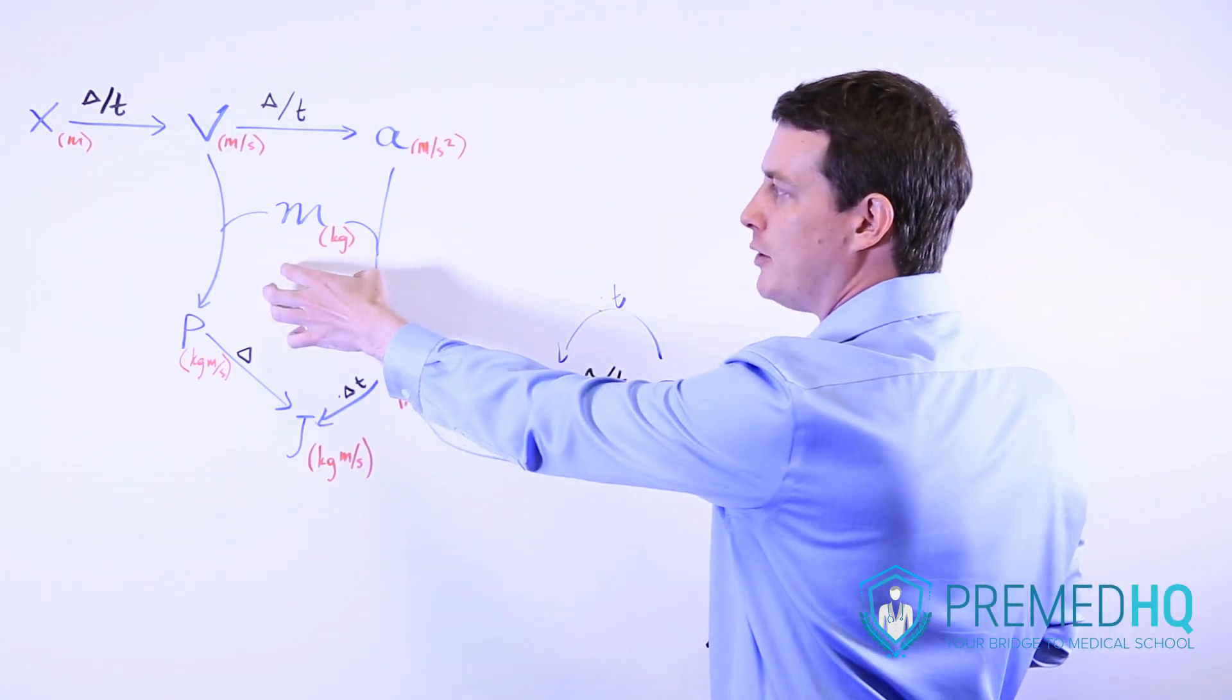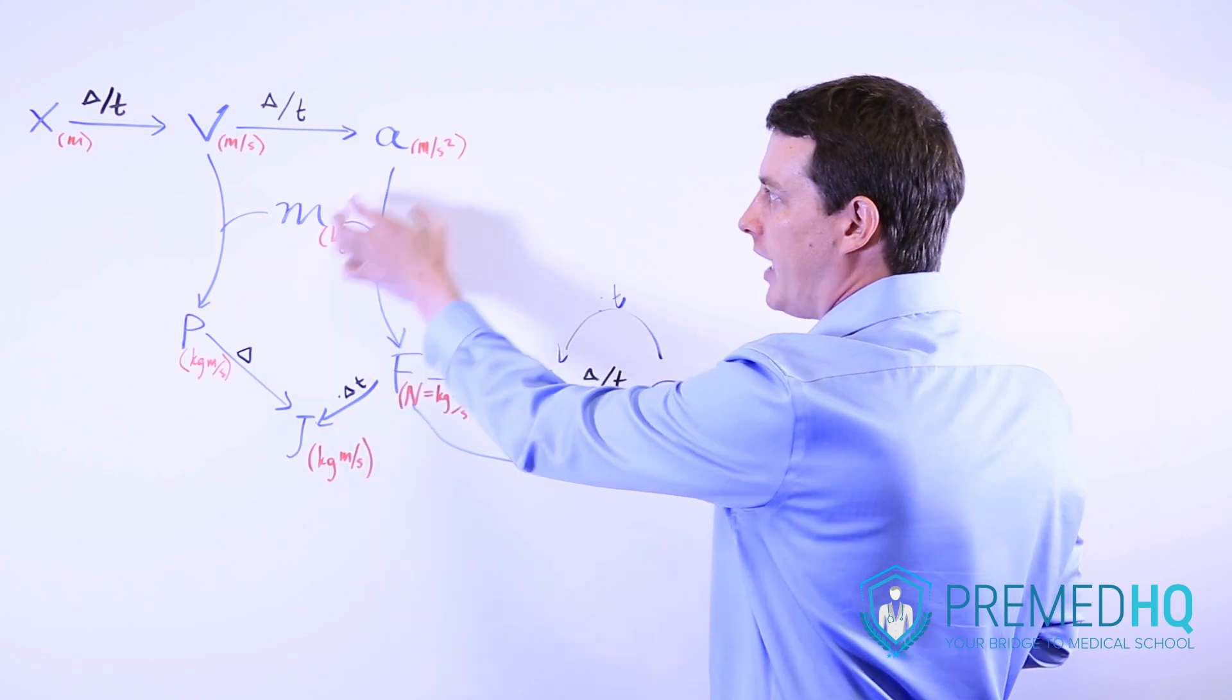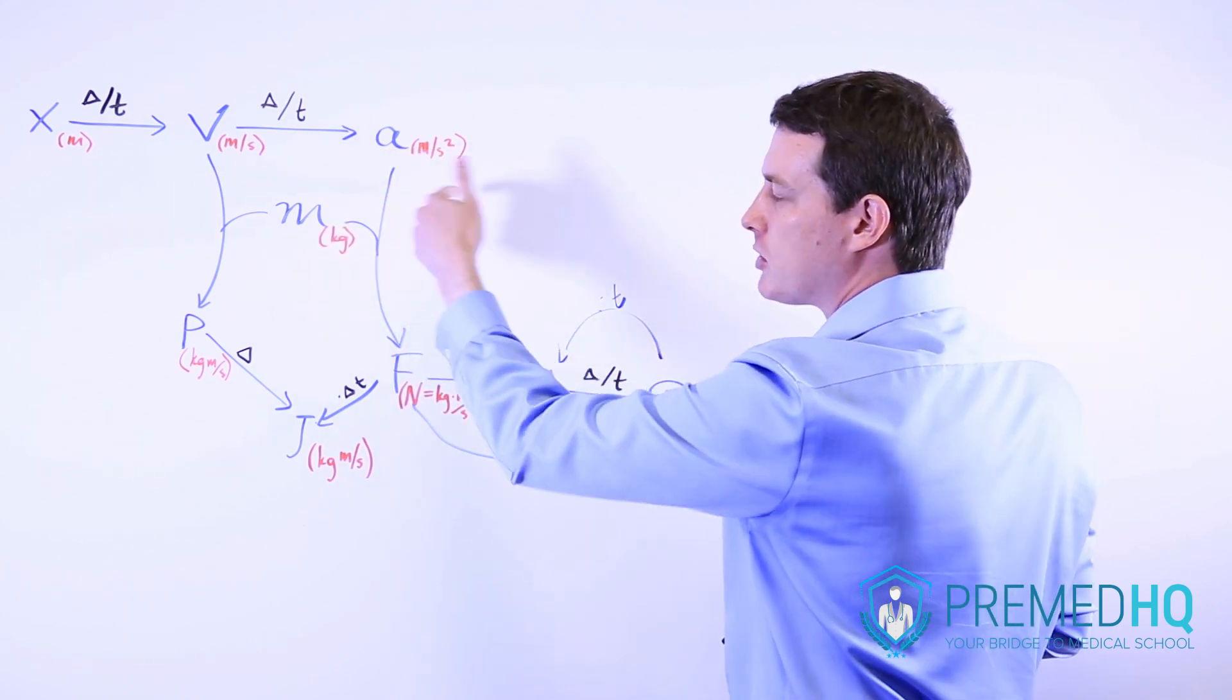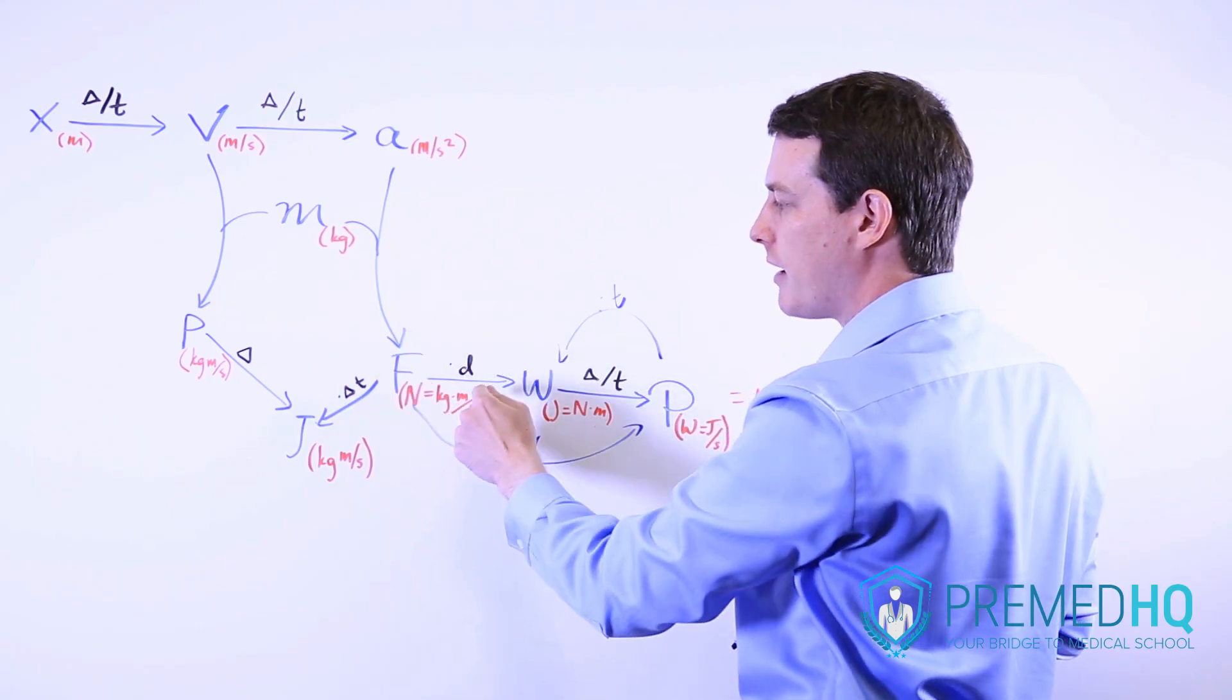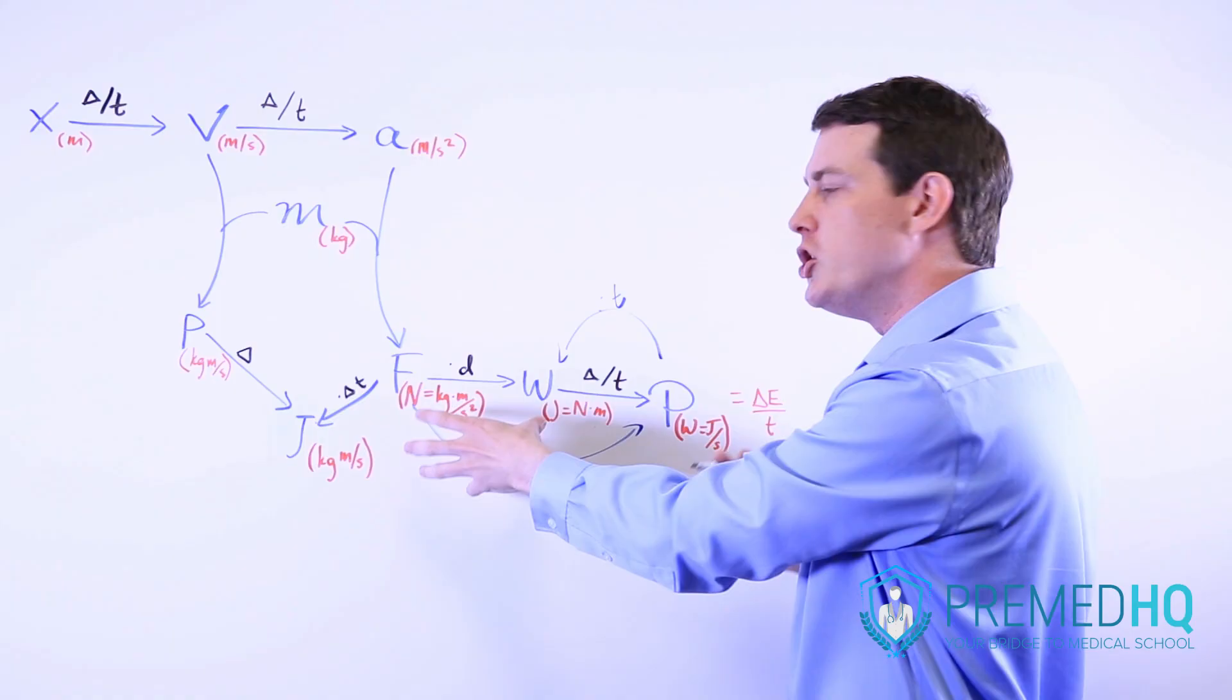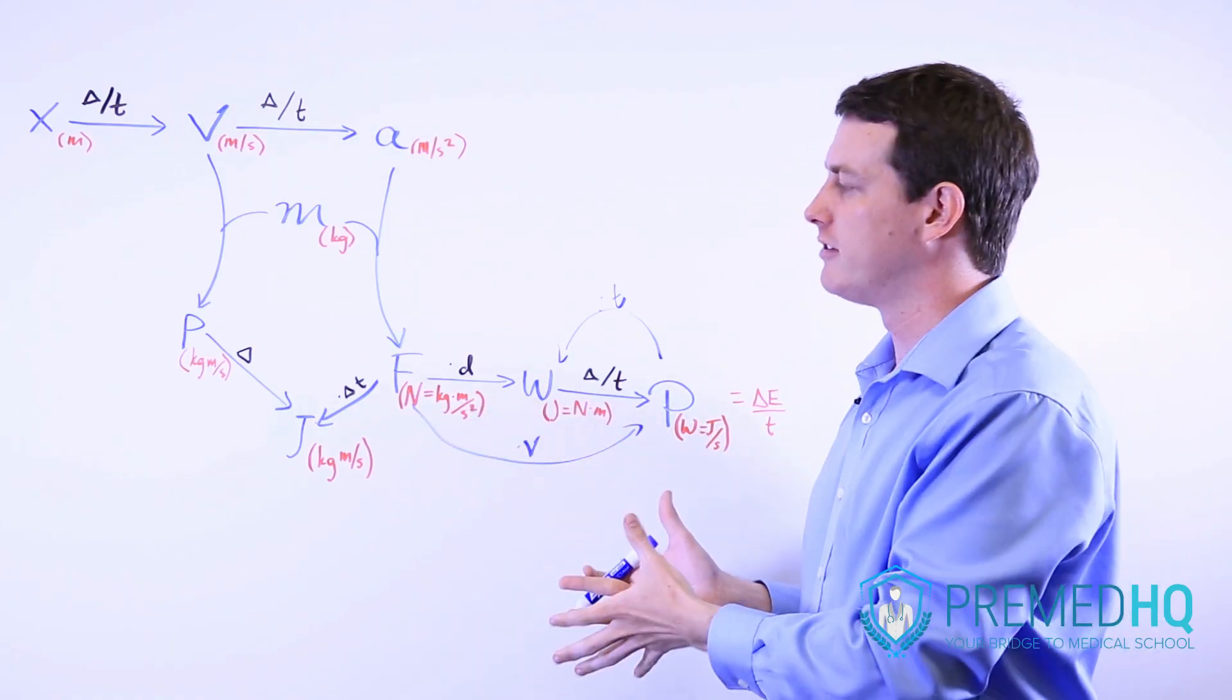Now, notice that the SI unit for mass is the kilogram and acceleration is meters per second squared. That, when you multiply those two together, it gives you kilogram meters per second squared, which is equal to the Newton, which is your SI unit for force.